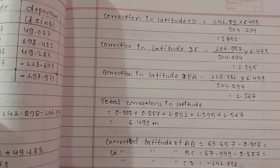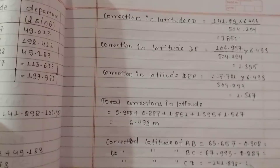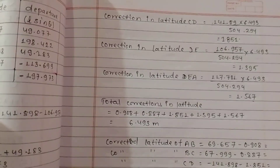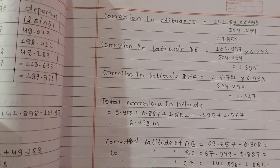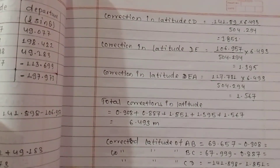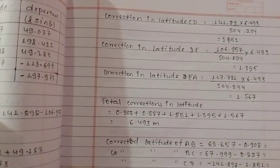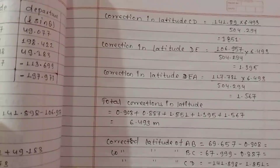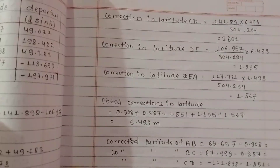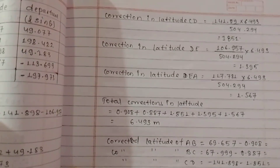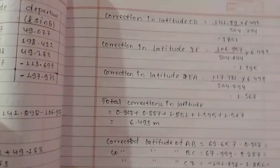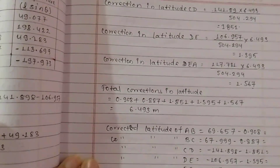Minus, going to put elements — one point 851. Correction for DD collection. Line DE correction: the original value is minus 106.957. Going to put 1.395. Equal in culture: 117.781. Minus — correction: 1.567. Corrected latitude calculation complete.